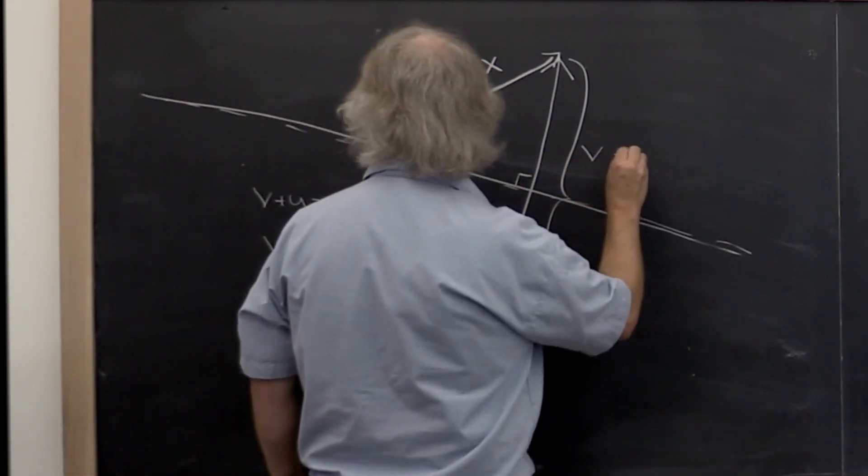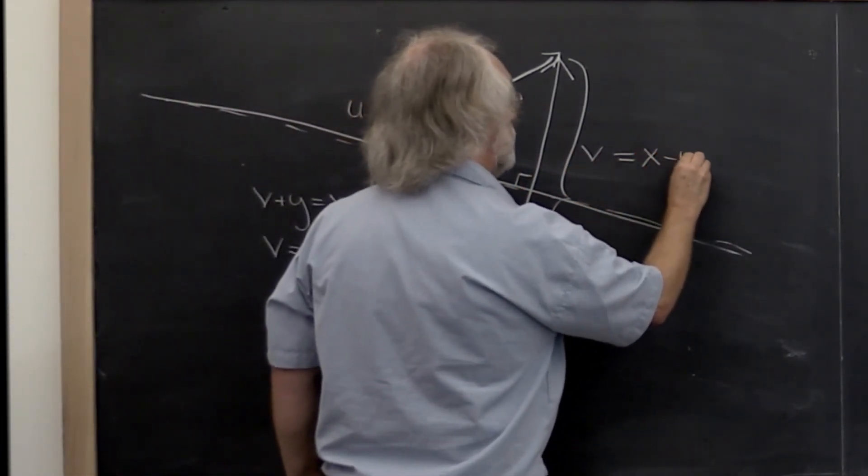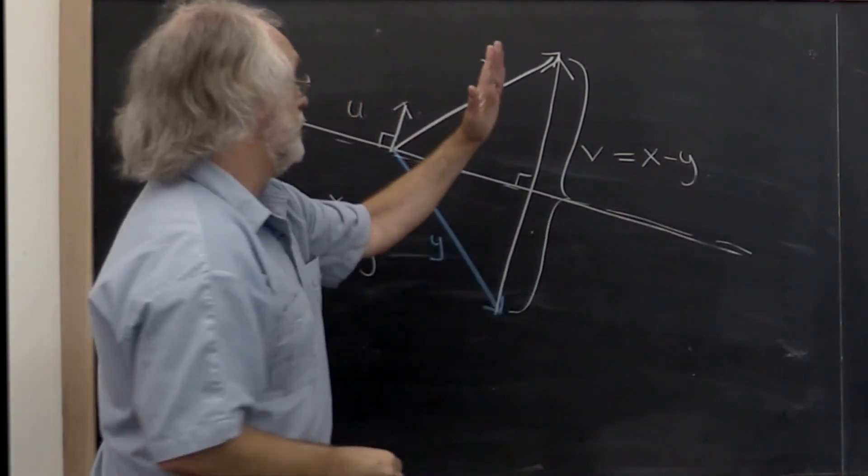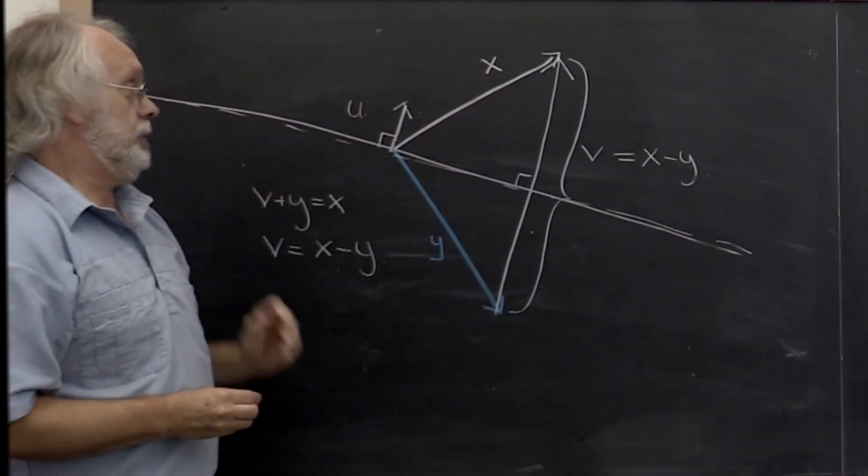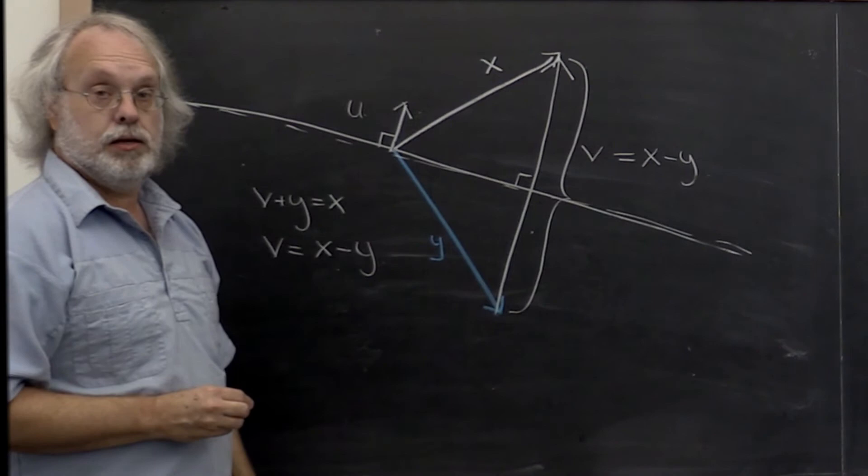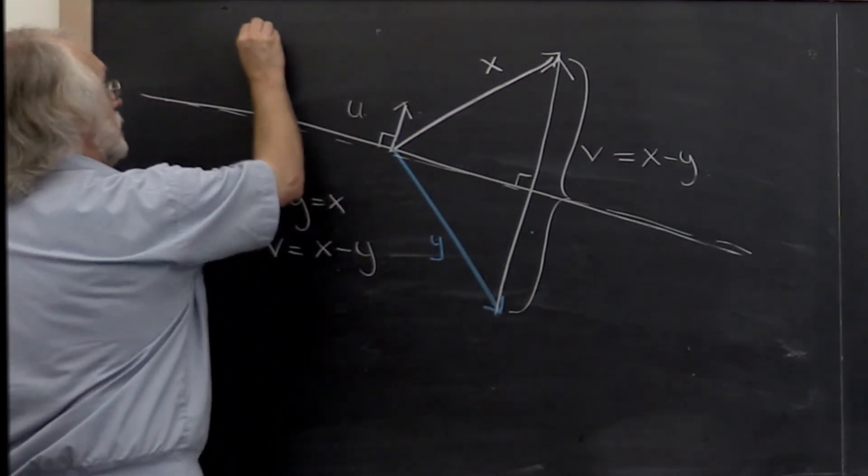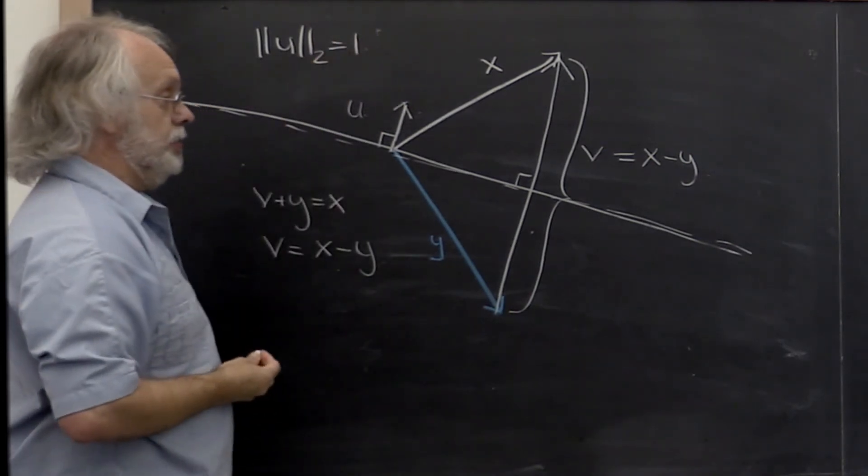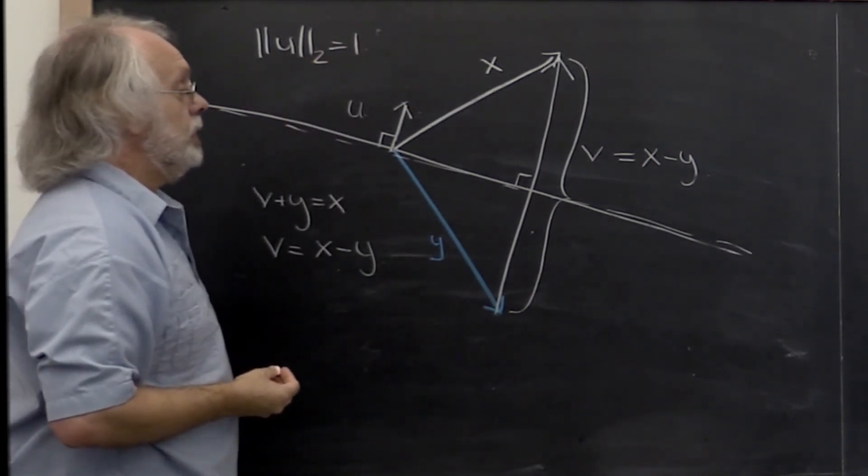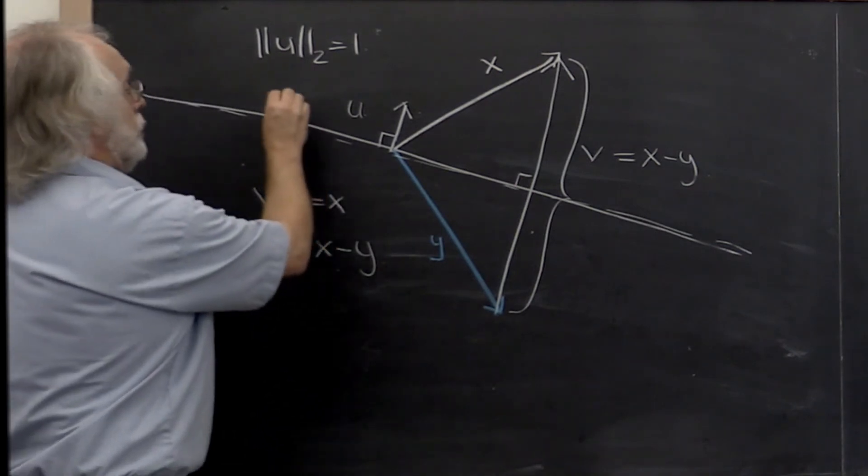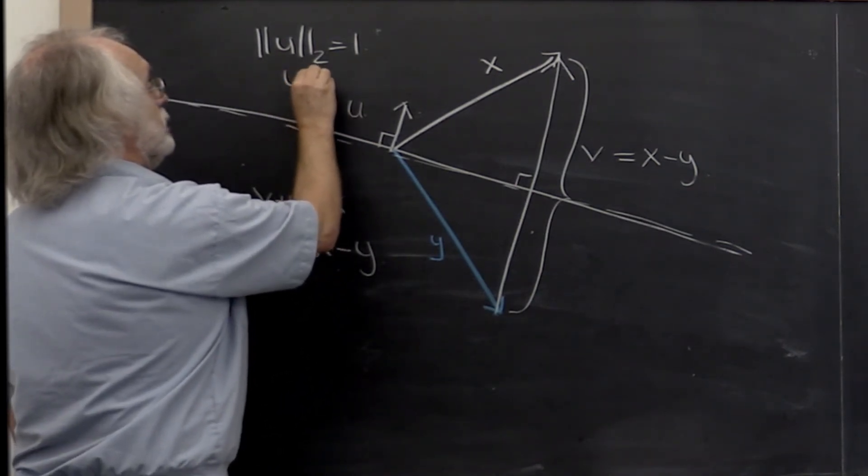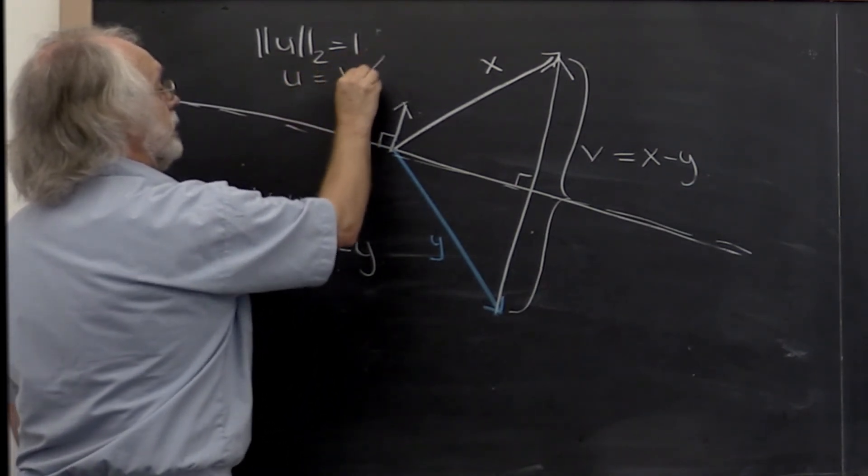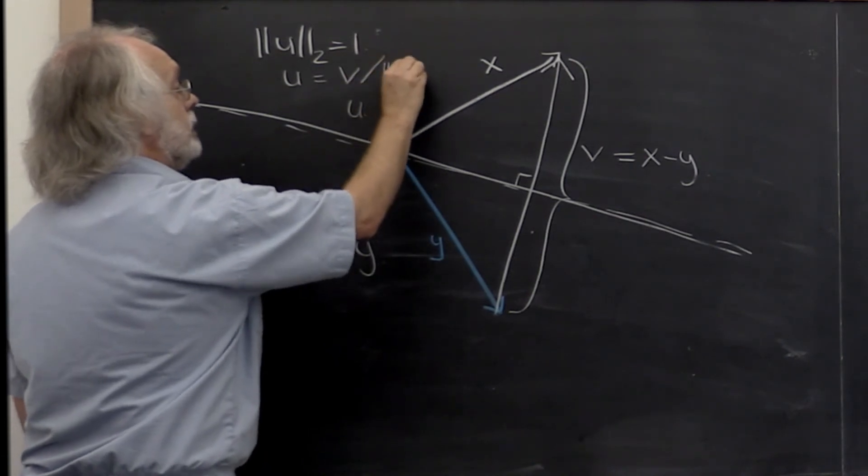So v is equal to x minus y. And that gives us the direction of the joystick. But now we want to make it so that the length of the joystick is equal to 1. The length of vector u is equal to 1. And therefore we can choose our vector u to be equal to the vector v divided by its length.